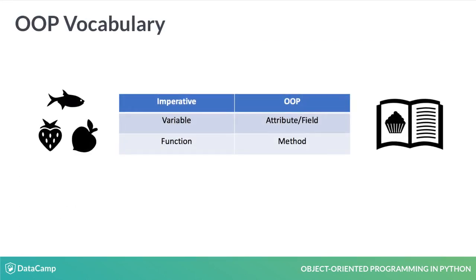Python has its own special vocabulary that we've used in imperative programming: functions and variables. When we create a recipe to follow, the terms in the recipe have special names. On the left-hand side of the picture are the imperative names; on the right-hand side are the OOP names. A variable in a class is called an attribute, or sometimes a field — they can also more generally be called class variables. A function in a class is called a method.